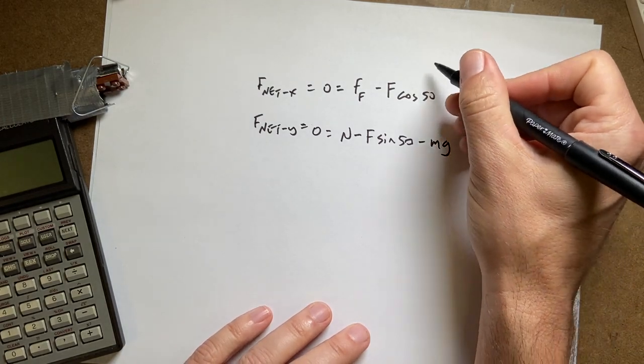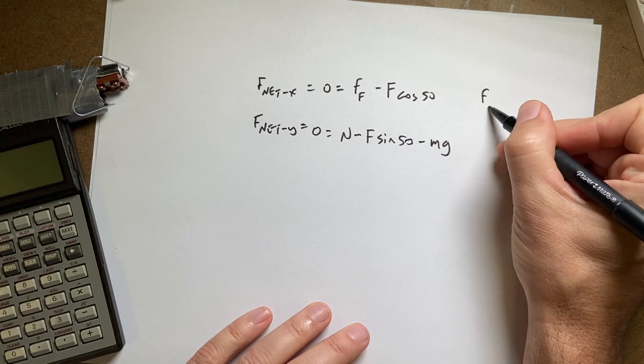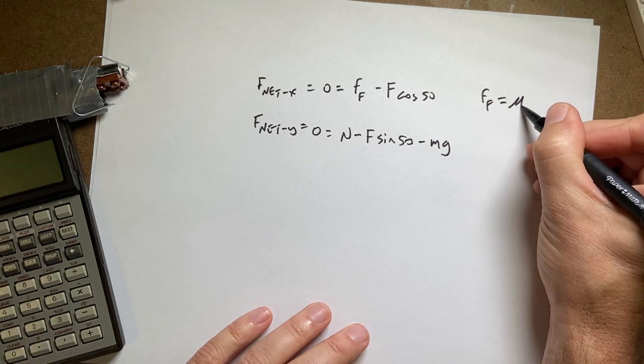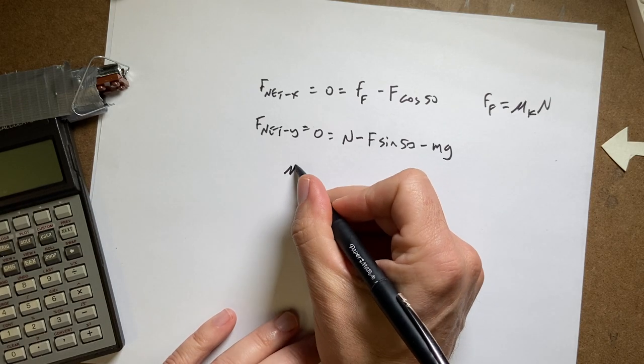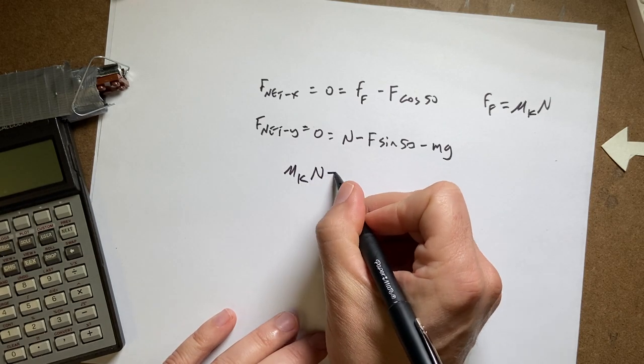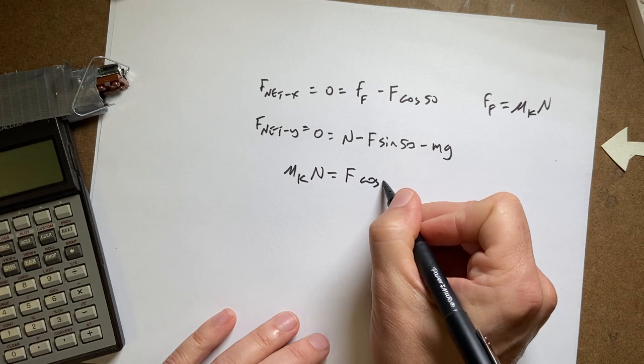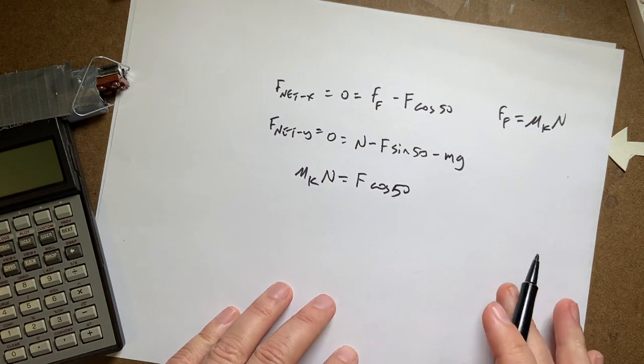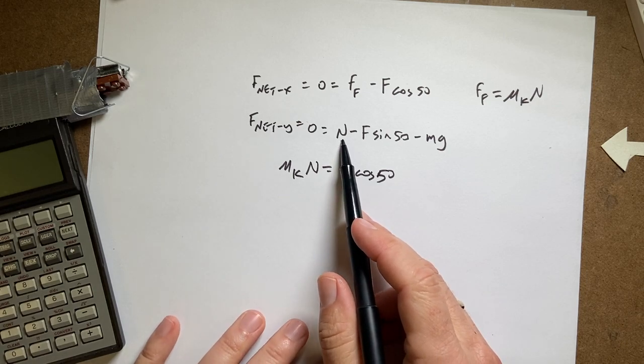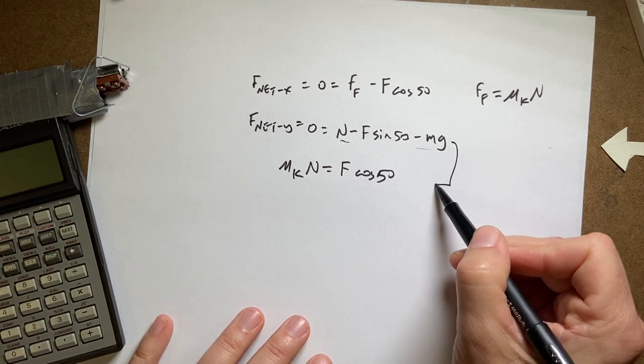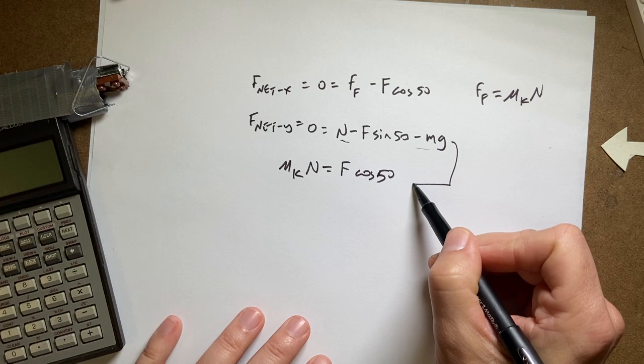Okay, so I can use my friction model. f friction is equal to mu k times n. I can put that in over here. I get mu k times n equals f cosine 50. So now I need to solve, well, what I'm going to do is, let's solve this one for n and plug it in down here. And then I can solve for f.